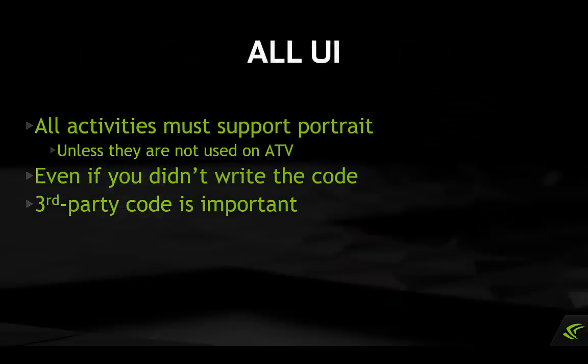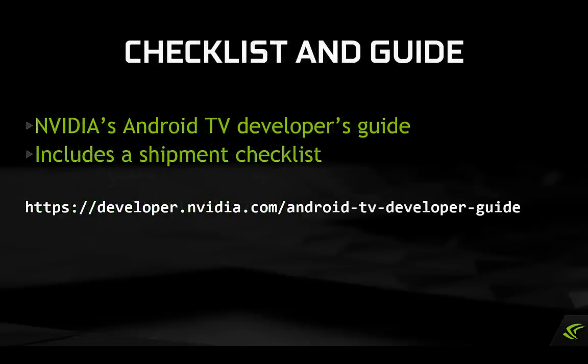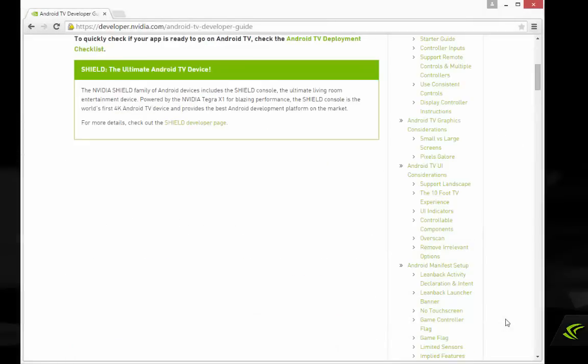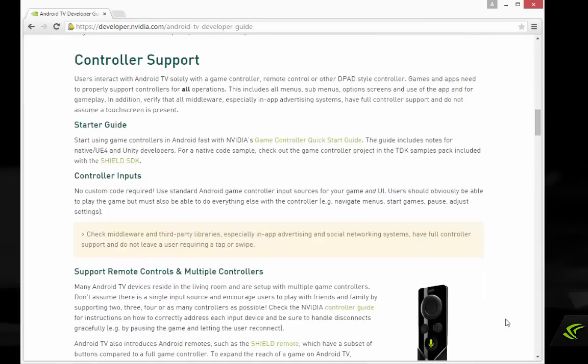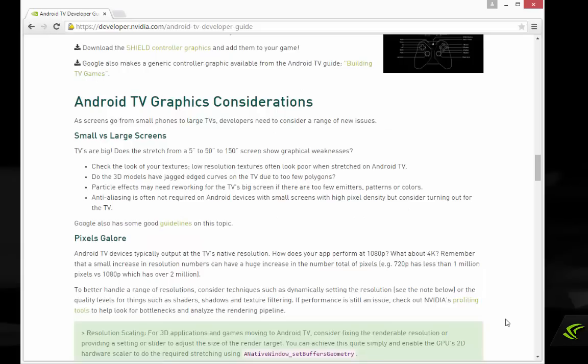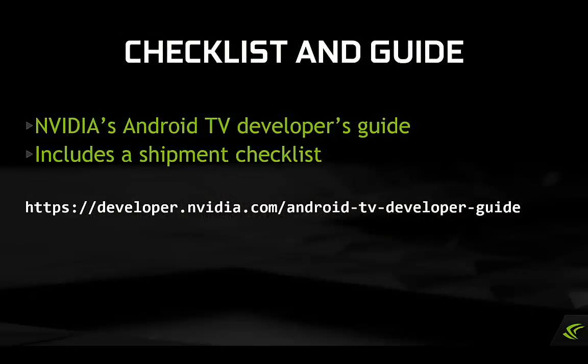This is extremely important. Whether you wrote the code or got it from a third party, if any of your activities require portrait orientation in their manifest declarations, you won't end up in the Play Store for Android TV. If you use middleware, you need to look into this as soon as you can. This and many other important checklist items can be found in NVIDIA's Android TV developer guide, shown on the slide here.